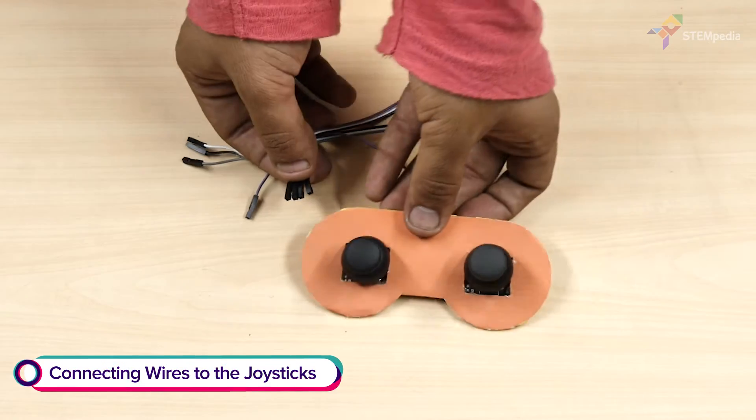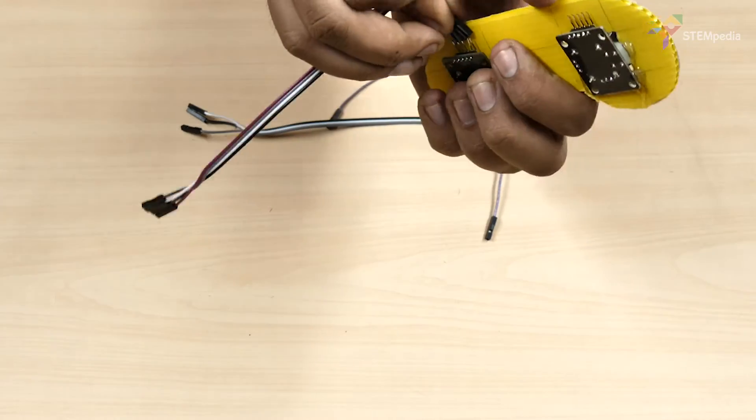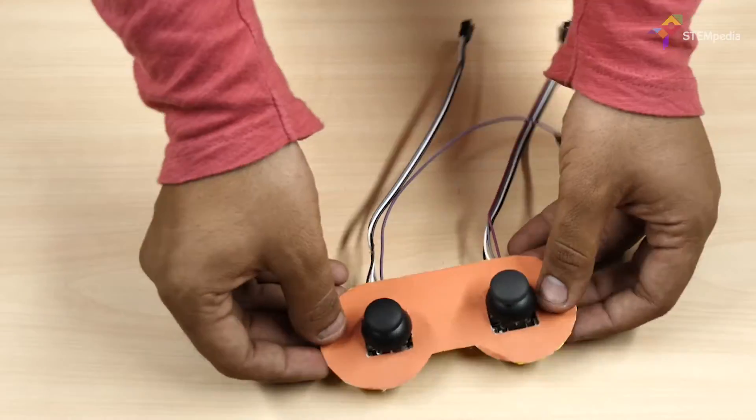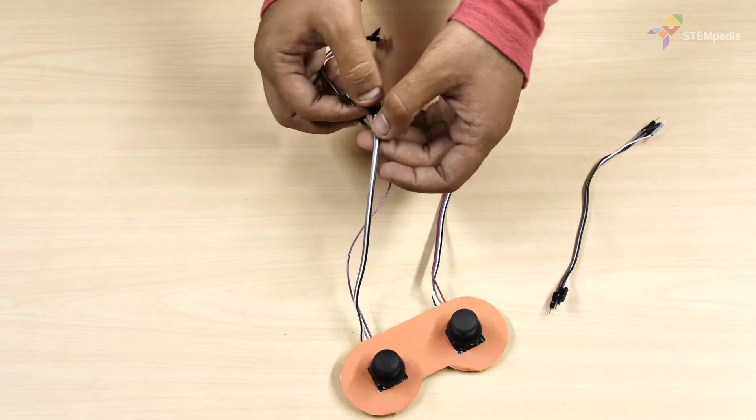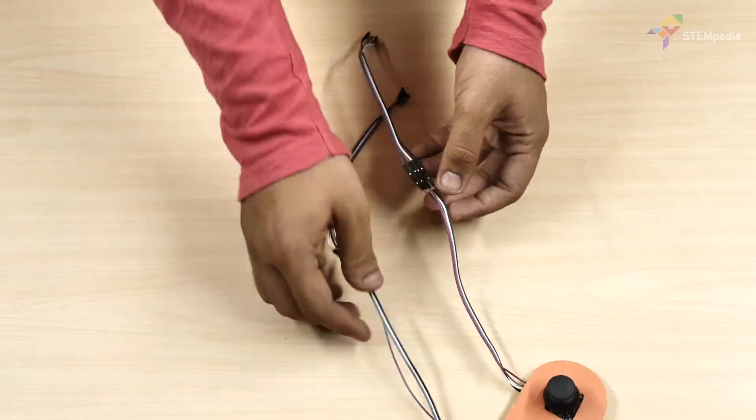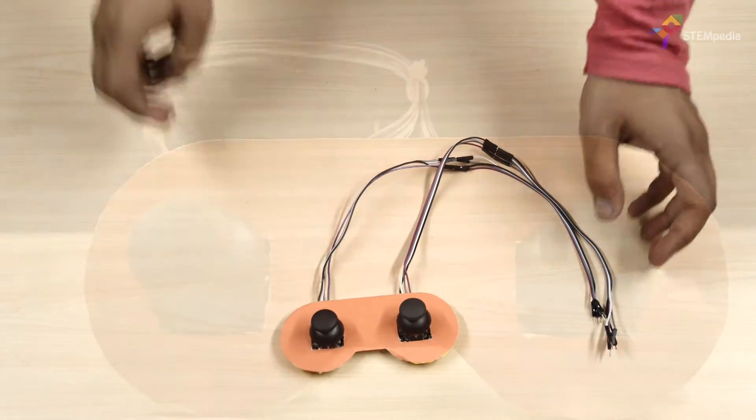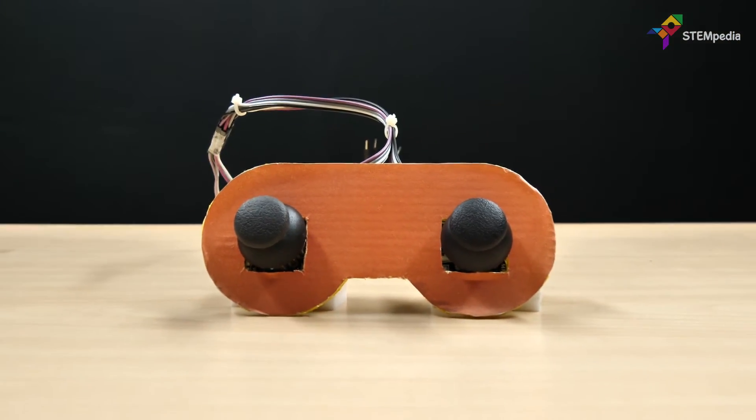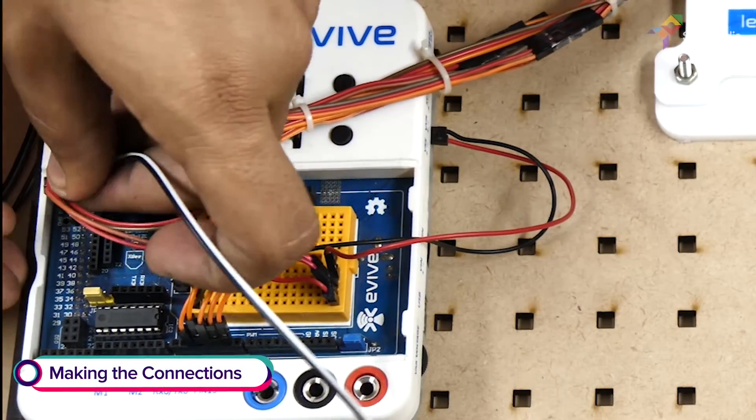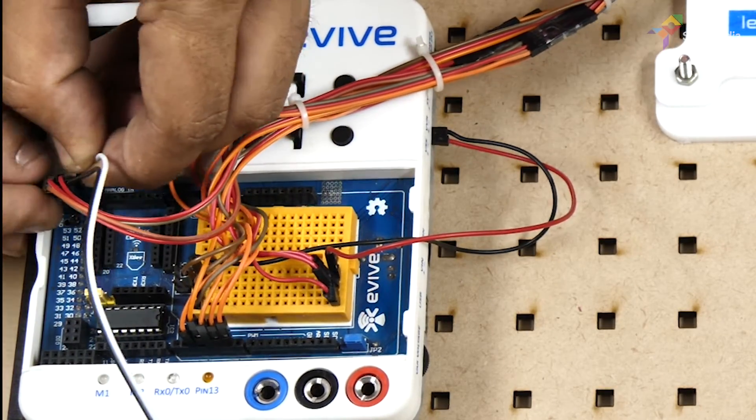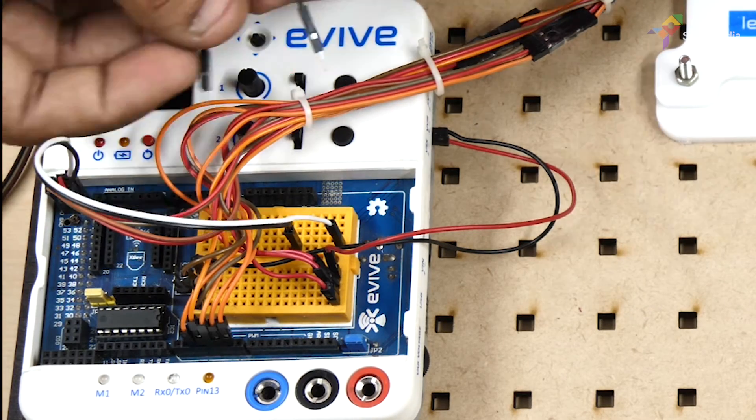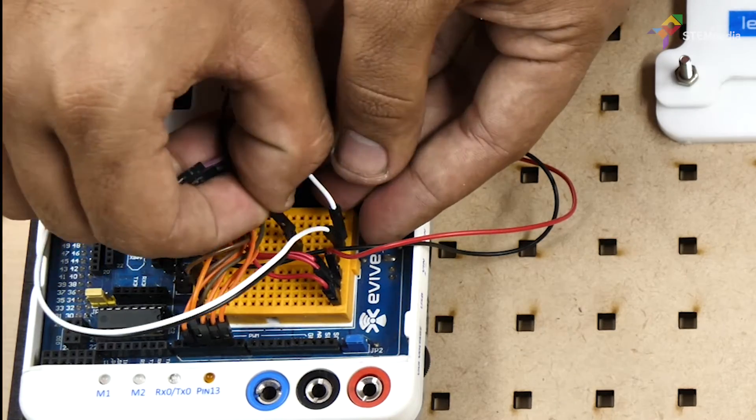Now, let's move on to the connections. Connect jumper cables to VCC, GND, VRX, VRY pins of the joysticks and extend them. Now, connect evive's 5V and ground to the breadboard. Insert the VCC and ground of the joysticks to plus 5V and ground row of the breadboard.